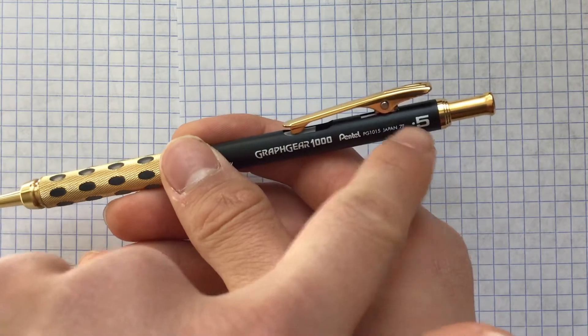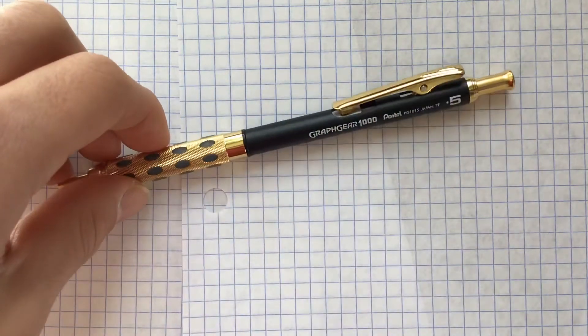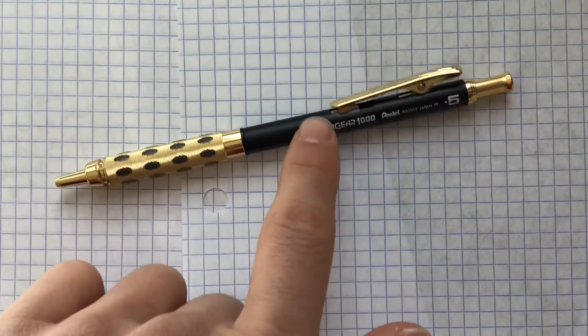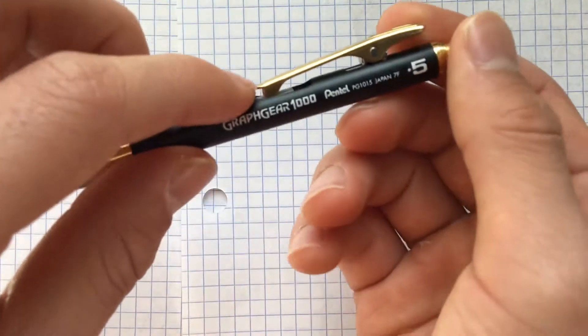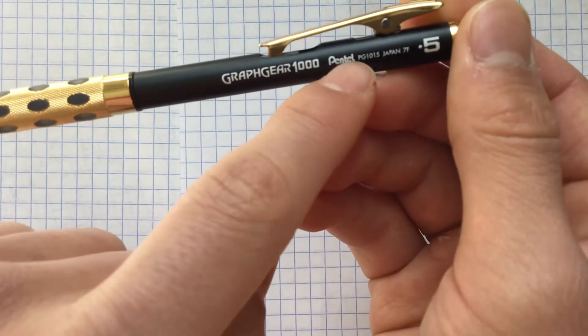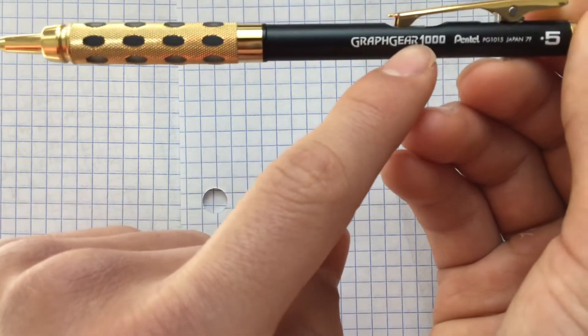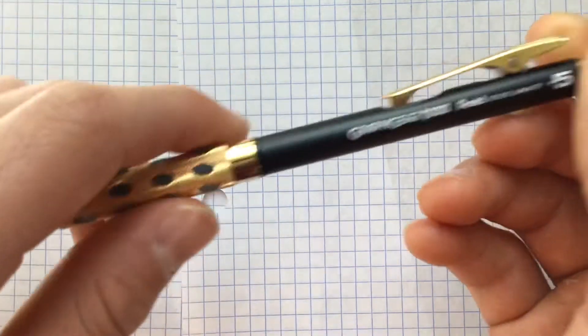These white letters right here, though it's not really noticeable on the Pentel Graph Gear 1000 normal one, on the limited edition ones they might tend to rub off a little bit. Like, you can kind of see some wear and tear here on the R right here. You can see some wear and tear for sure.